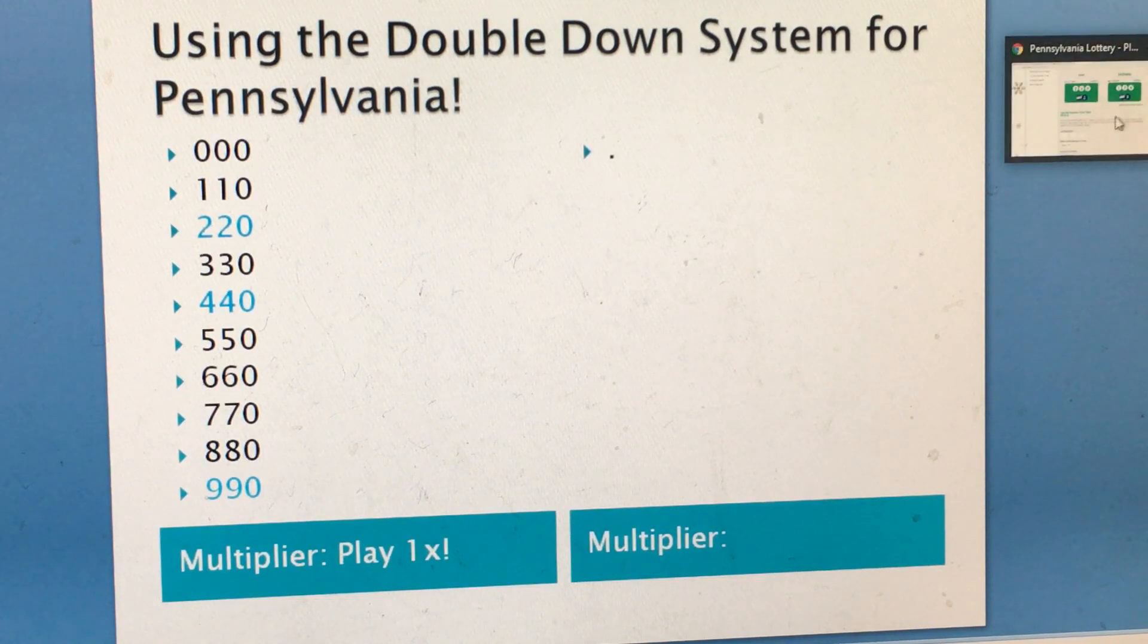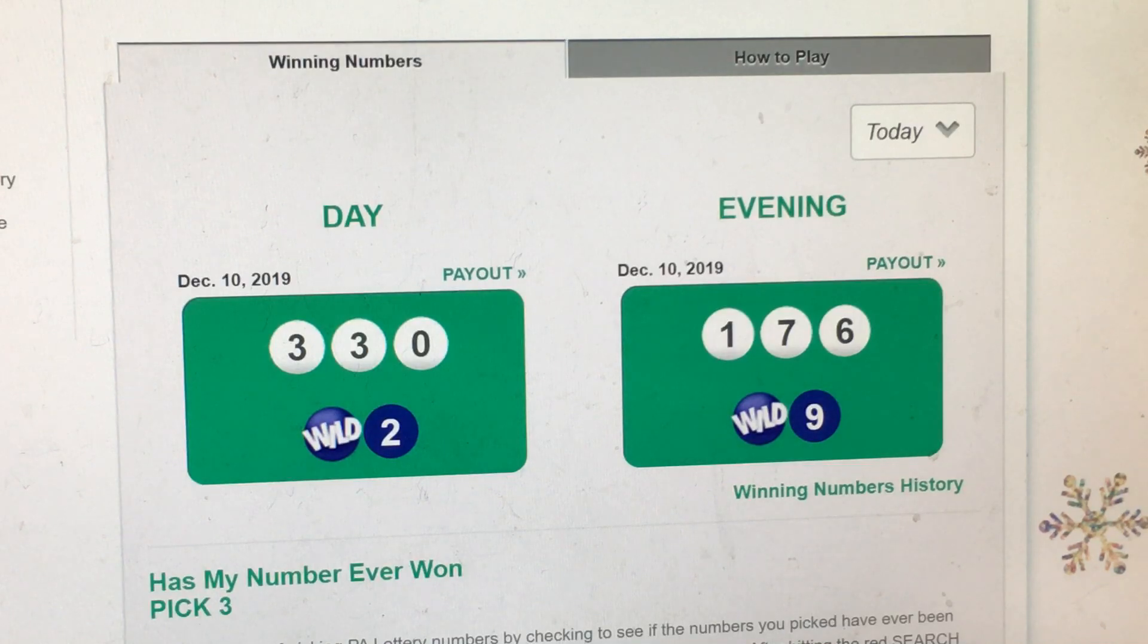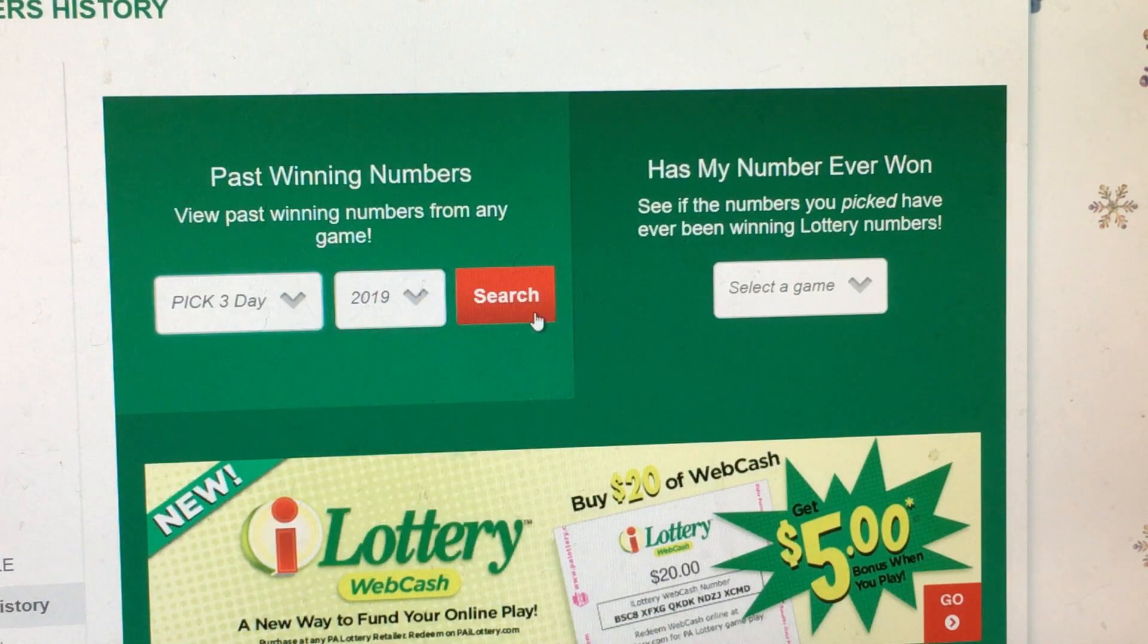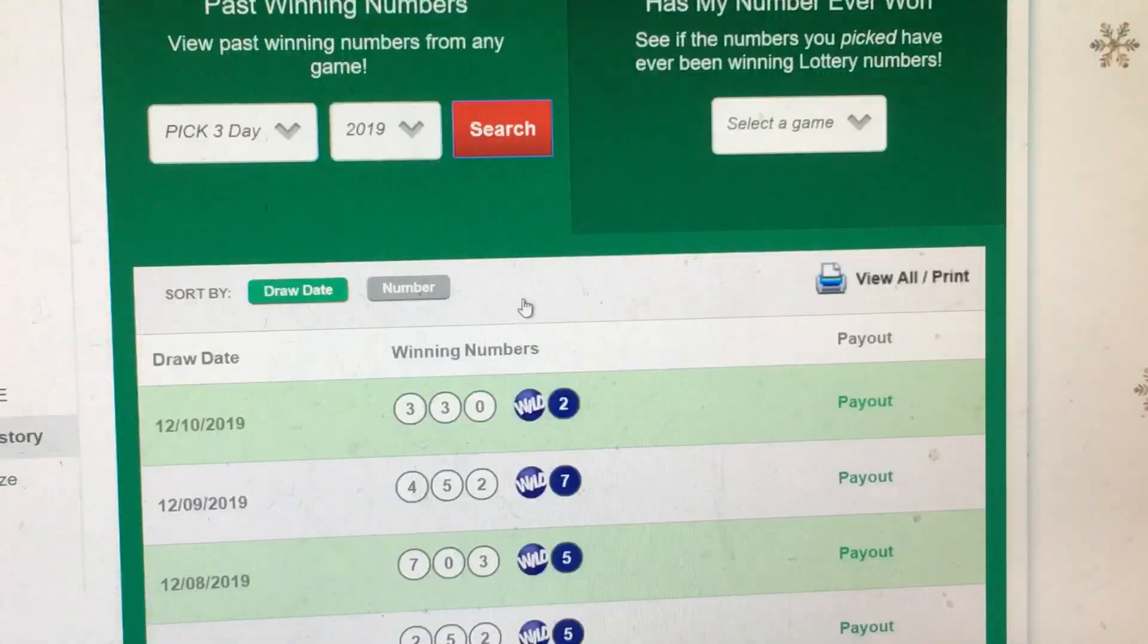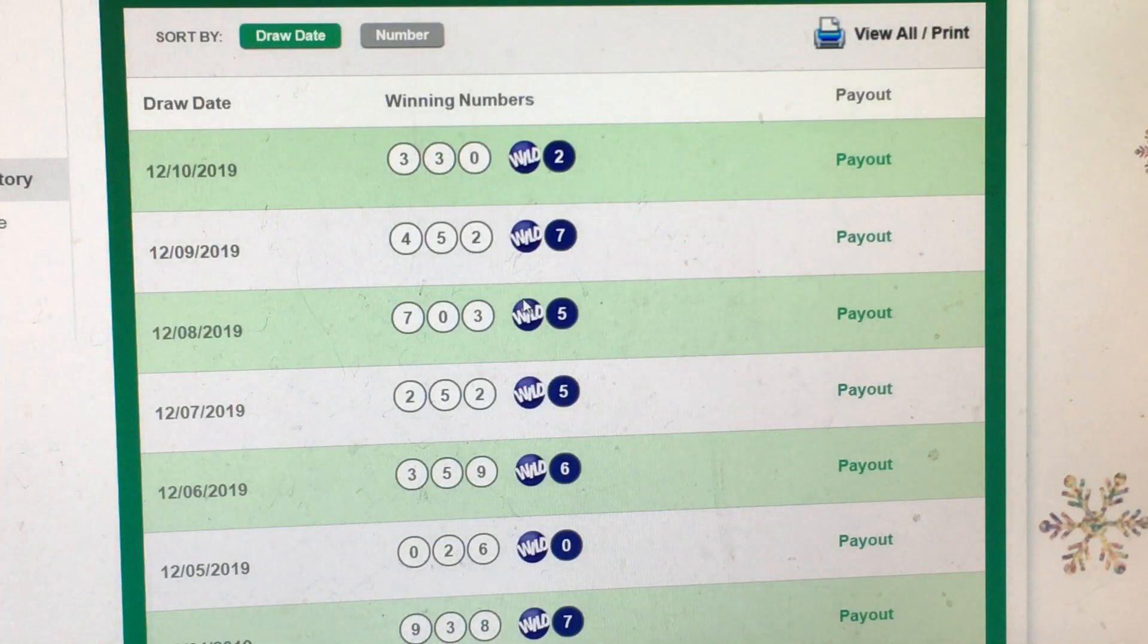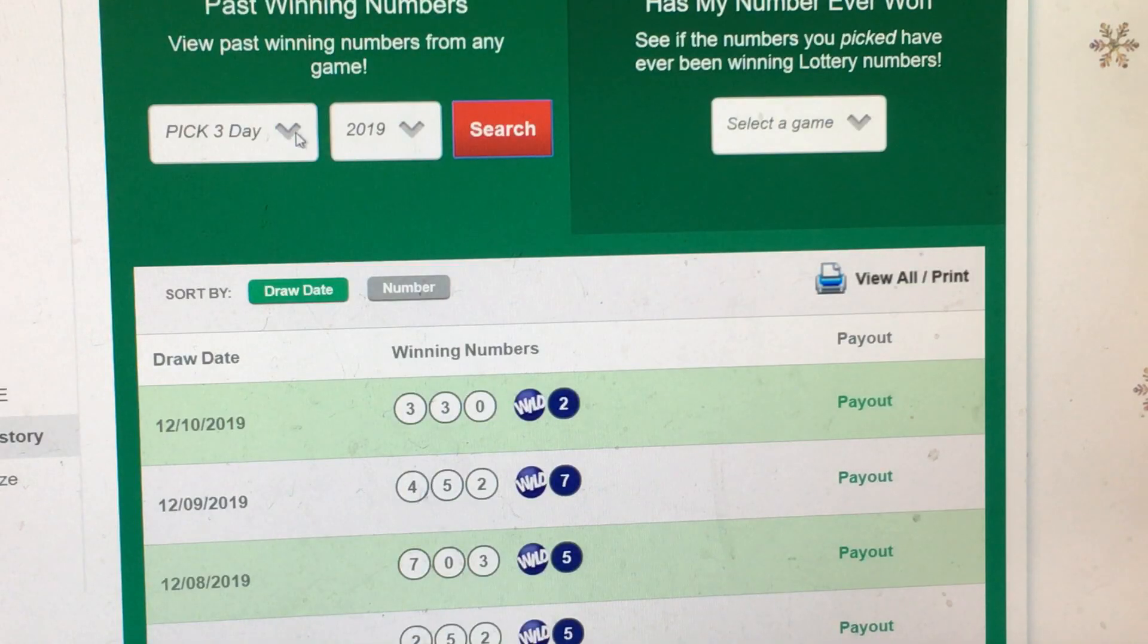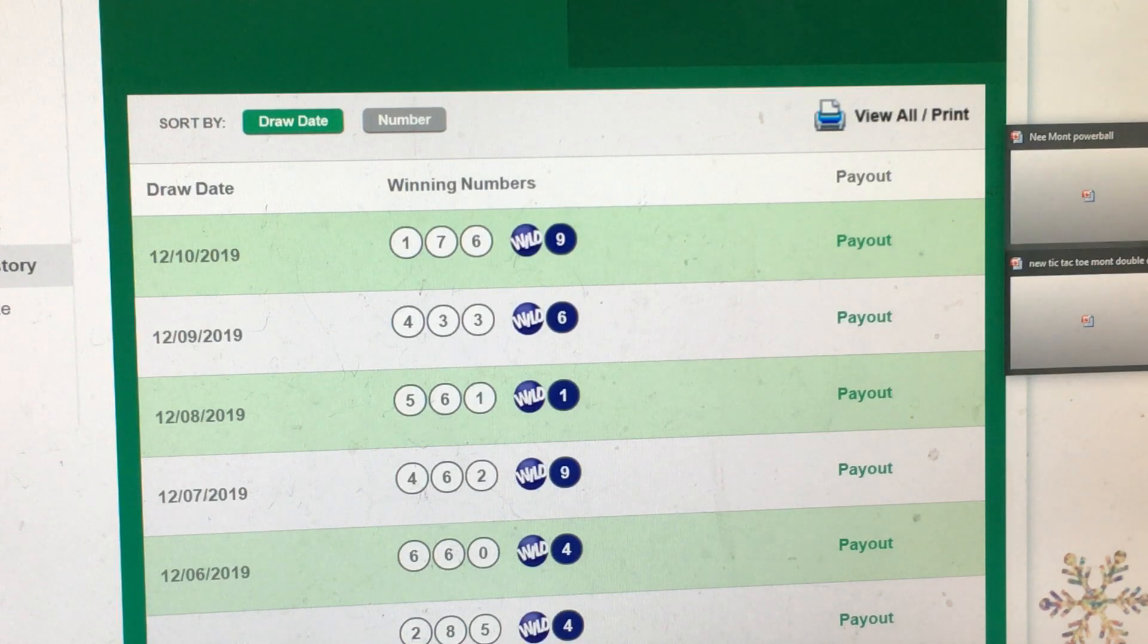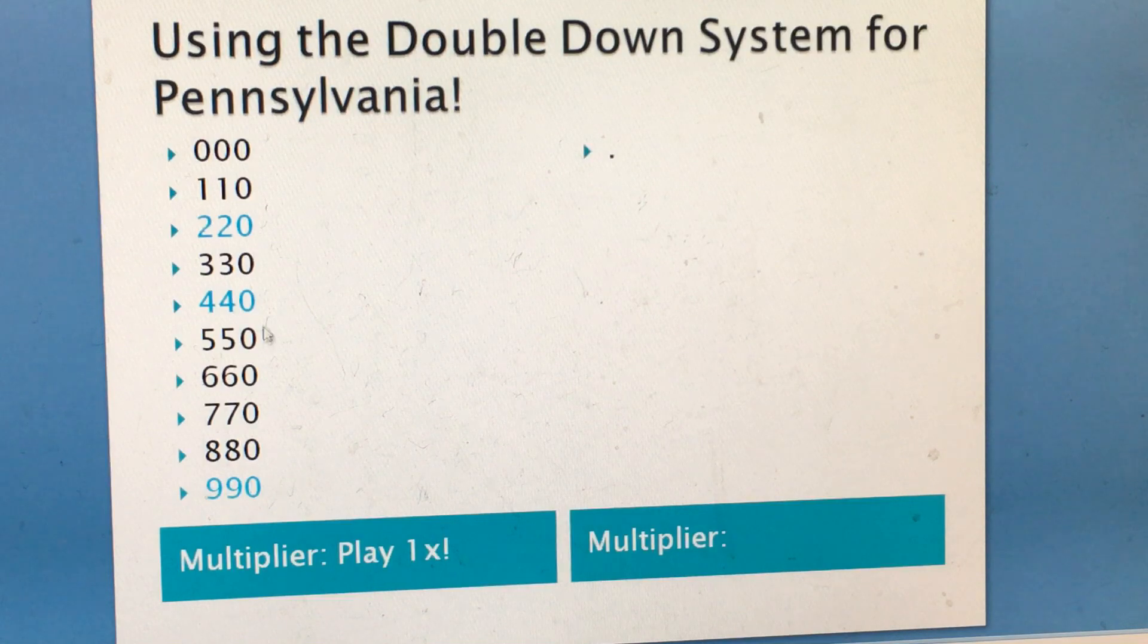Now, let's check. So that means we have 4, 3 and 660. So this set hit twice. 660 and 330.